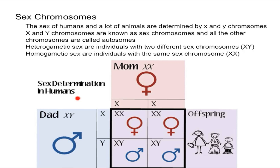Here I have a chart that shows how the sex of the offspring is determined. As you can see, the mom can only donate X chromosomes, so it's actually the father that determines the sex of the offspring. If the father gives an X chromosome, the offspring will be female because the offspring will have two X's. However, if the dad gives a Y chromosome, then the offspring will be male.